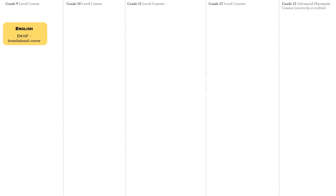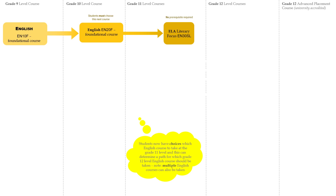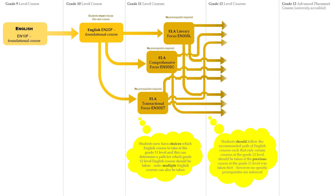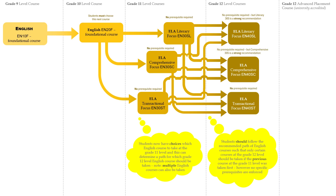English Language Arts is a core subject for graduation that starts in Grade 9, then a mandatory course in Grade 10. Grade 11 courses offer choices. Those choices at the Grade 11 level can determine a path for which Grade 11 and Grade 12 English courses should be taken.